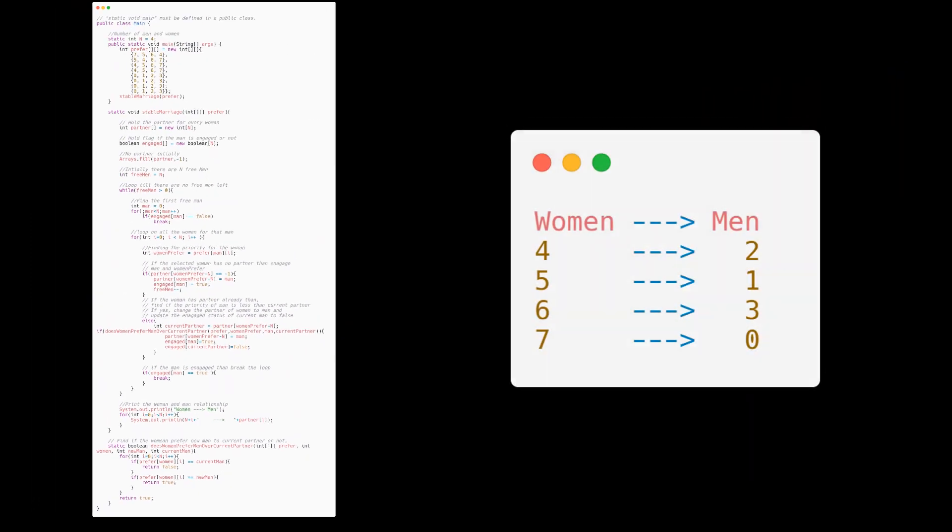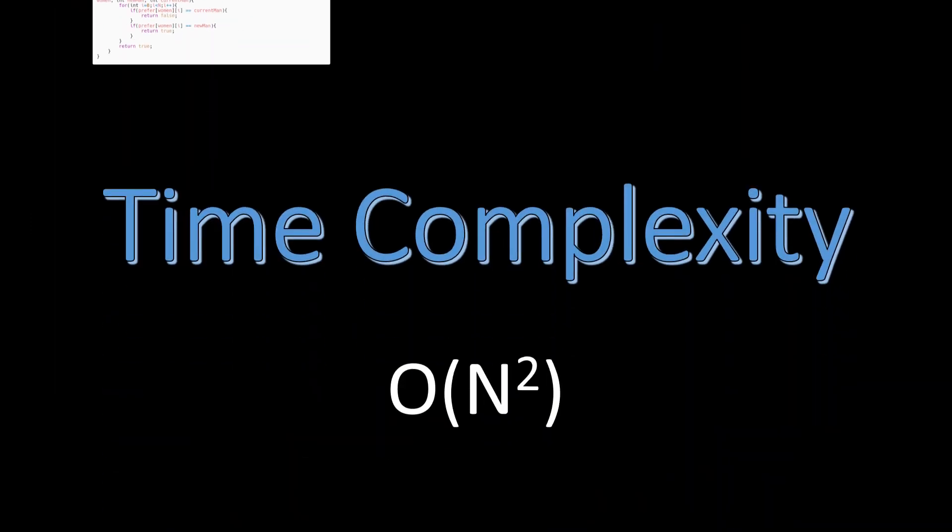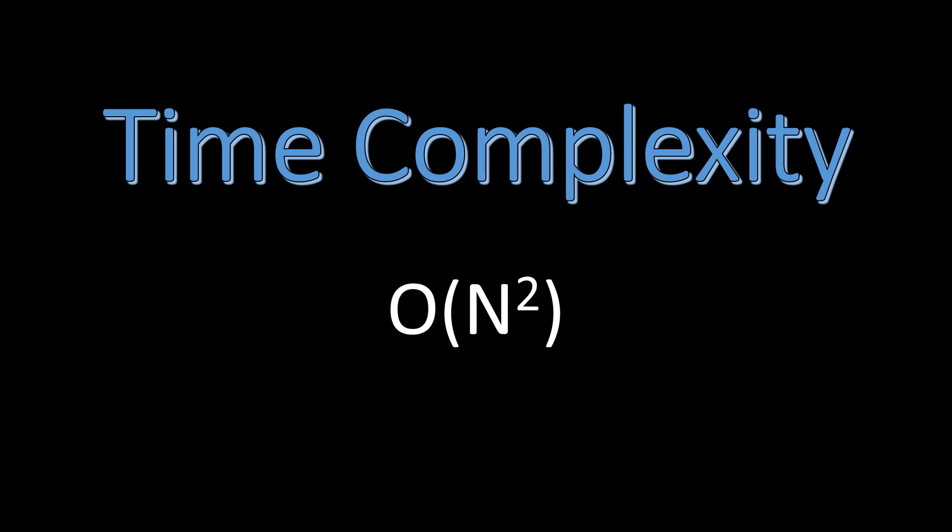When we run the code, we get this relationship. It shows which man each woman should marry. The time complexity of the algorithm is O of n squared.